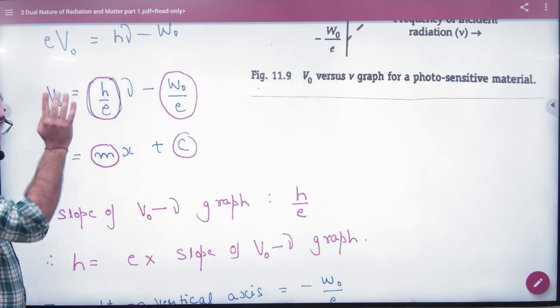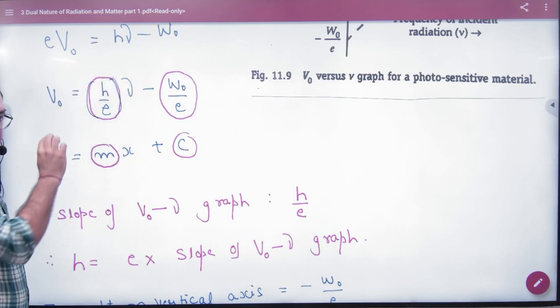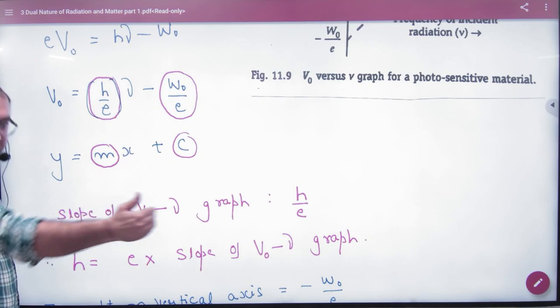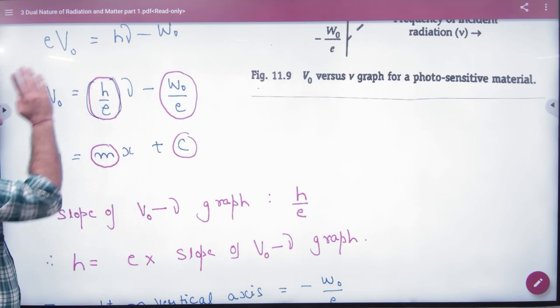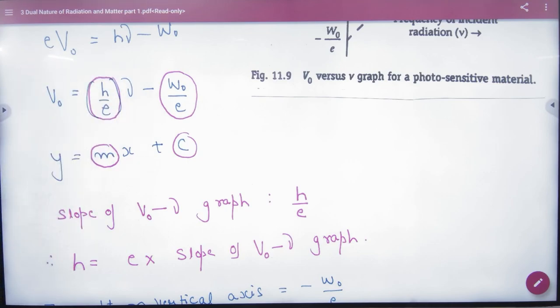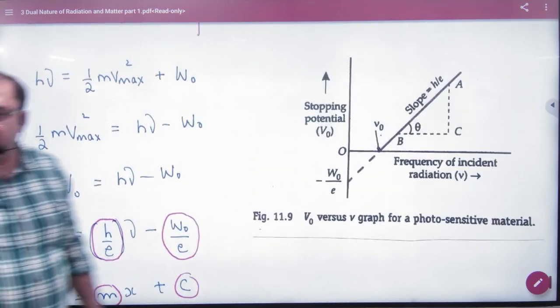So what is slope value? h/e. And if I plot V₀ versus frequency, then this slope is h/e and this intercept is minus W₀/e.